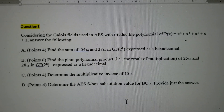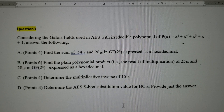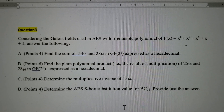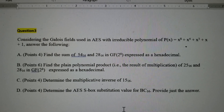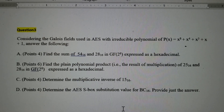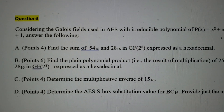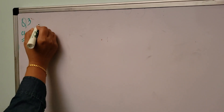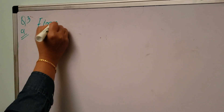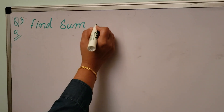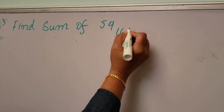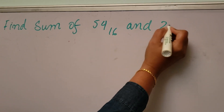Considering the Galois fields used in AES with irreducible polynomial P(x) equal to x to the power 8 plus x to the power 4 plus x to the power 3 plus x plus 1. Answer the following: Question 3, Part A — find the sum of 54 and 28 (hexadecimal).